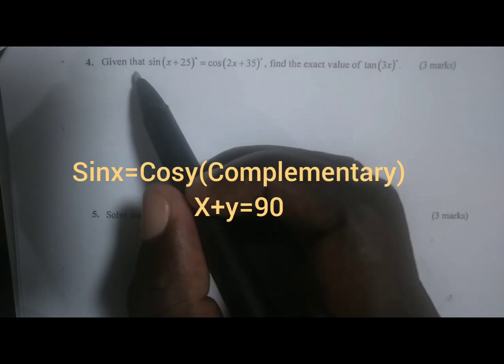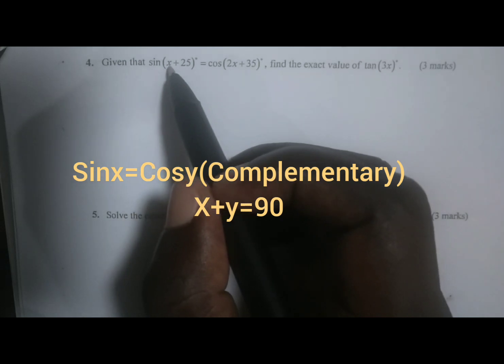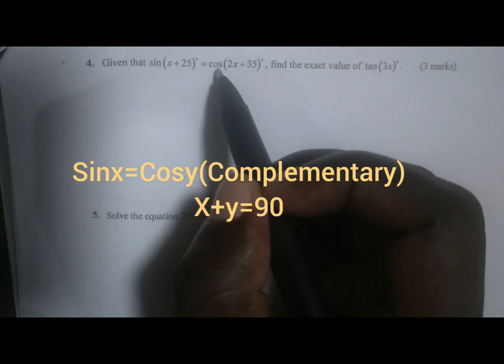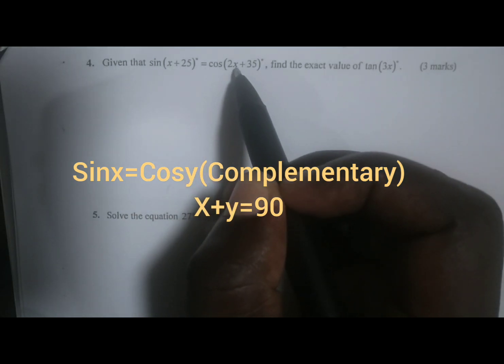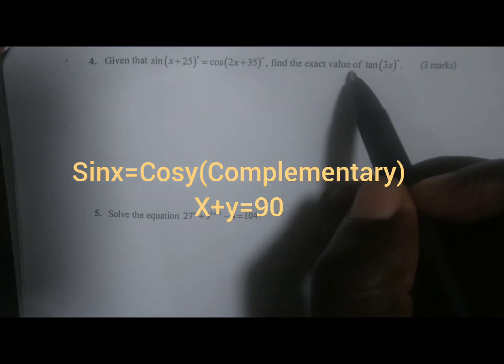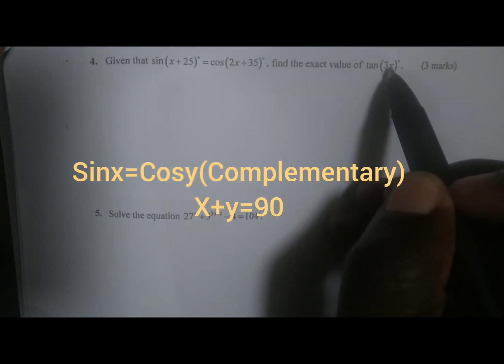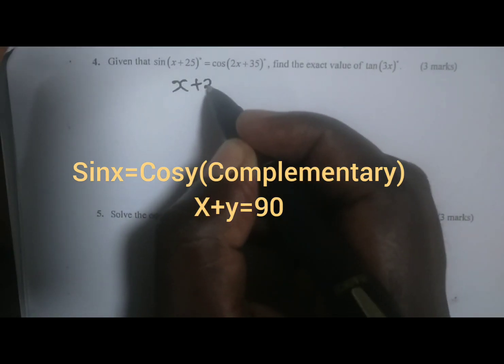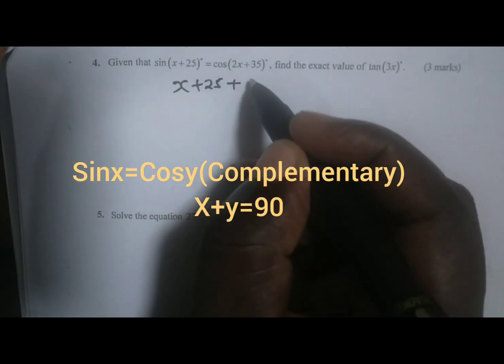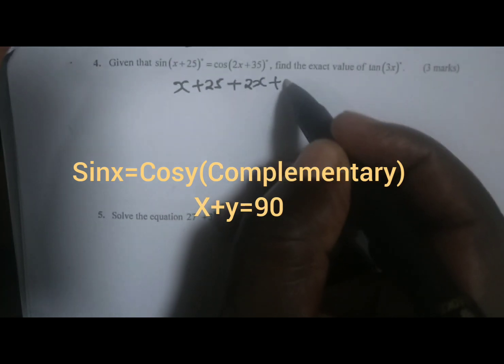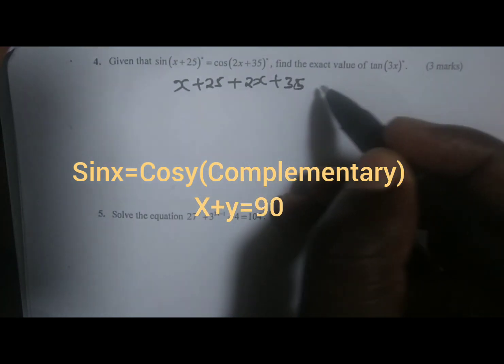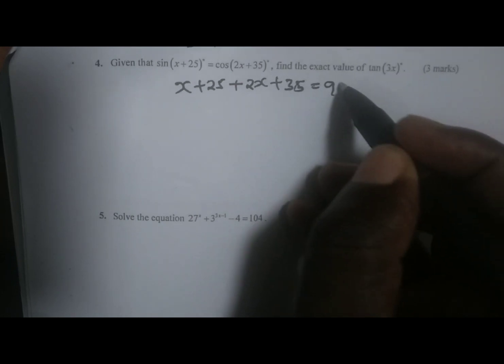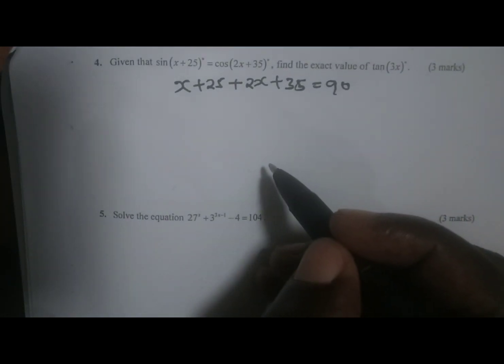The question reads: given that sin(x+25) is equal to cos(2x+35), find the exact value of tan(3x) degrees. If we take x+25 plus 2x+35, the two are complementary and therefore they add up to 90 degrees.